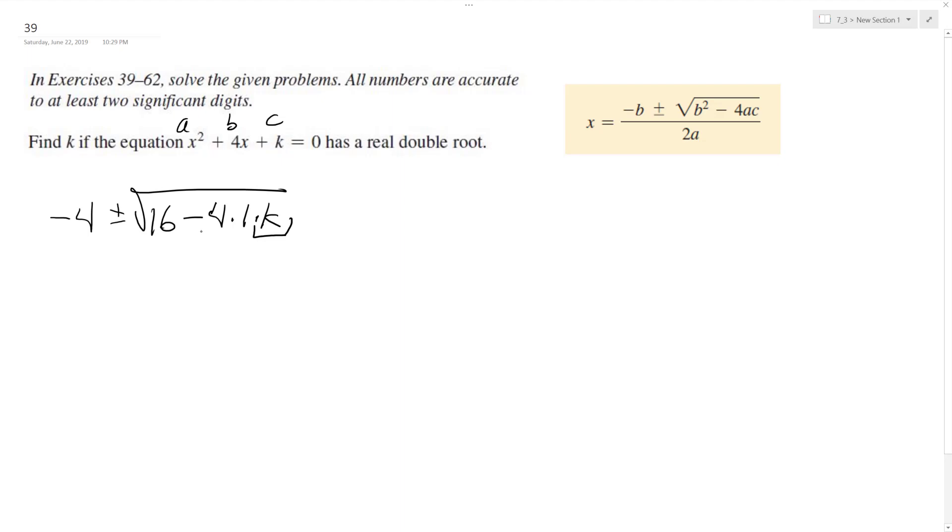You can see what needs to be, but basically all over 2 times 1. So basically 16 minus 4k times the 1 equals 0. We get 16 is equal to 4k, divided by 4, k has to equal 4.